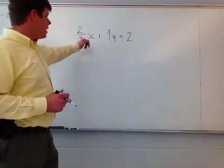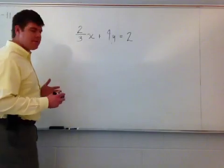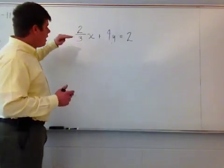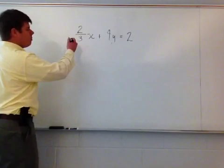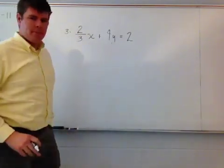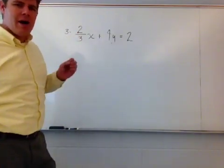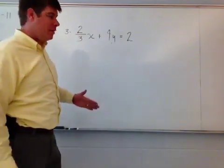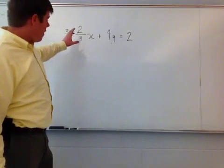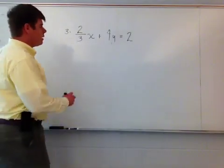So, 2/3x plus 4y equals 2. If I want to get rid of that, all I have to do is multiply this particular case by 3. If I multiply this expression by 3, if I multiply 2/3x by 3, remember, I must multiply everything. If I multiply one thing, I must multiply everything by that on that side. The way that I show that is with the parentheses.